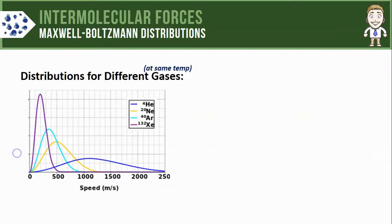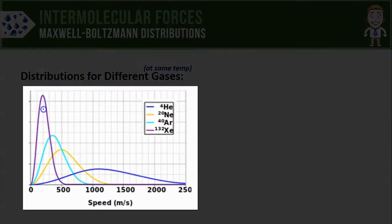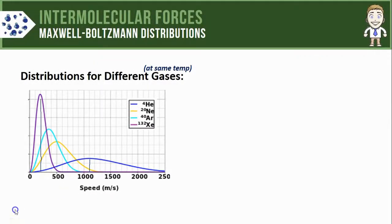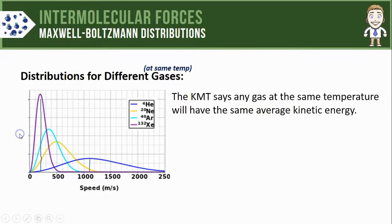You might think that different gas particles, as long as they're at the same temperature, should have particles traveling roughly the same speed, but this graph points out that that's just not the case. The xenon line in purple shows that the xenon particles are traveling at much slower speeds on average compared to the helium particles that are traveling much faster. To understand why that is, the first thing we have to do is